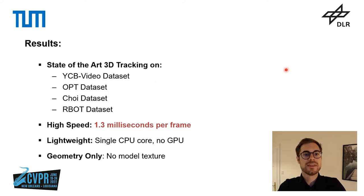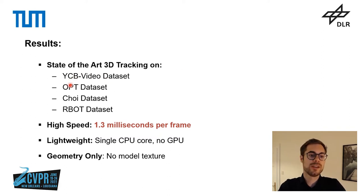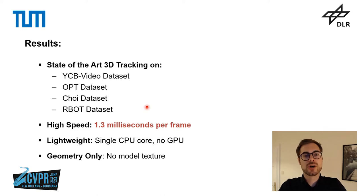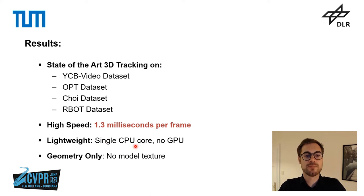With this relatively simple approach we are able to achieve state-of-the-art results on the YCB Video, Opt, Choi, and RBOT datasets. Especially on the Opt, Choi, and RBOT datasets we achieve the currently highest score. Our approach is also highly efficient, requiring only 1.3 milliseconds per frame on a single CPU core without requiring the GPU during tracking.